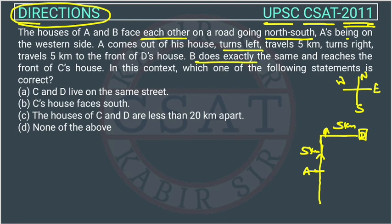B does exactly the same. B is on the east side facing west. B comes out of his house and takes a left turn — just like A did — so B will also go north, traveling 5 km. Now B is facing north.